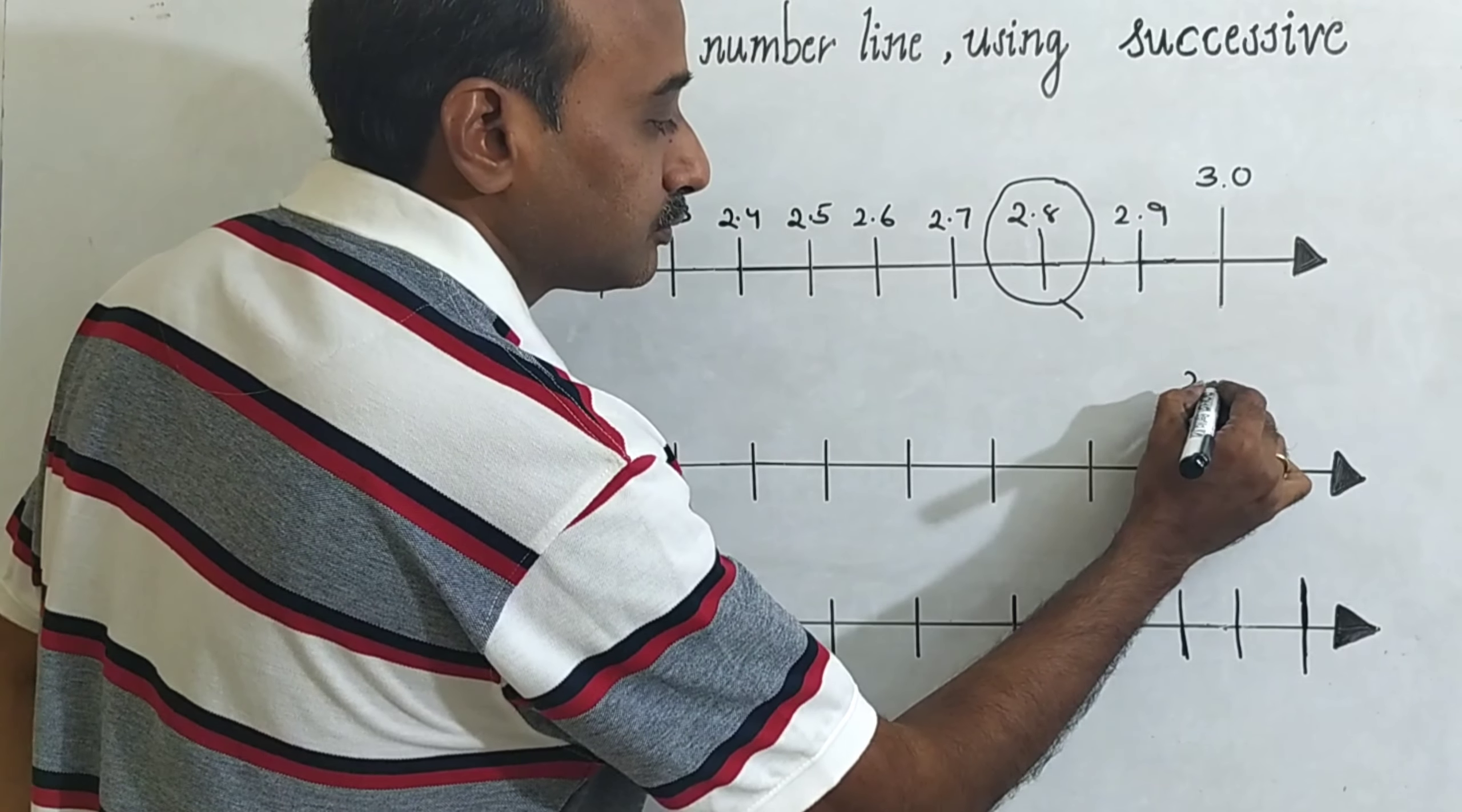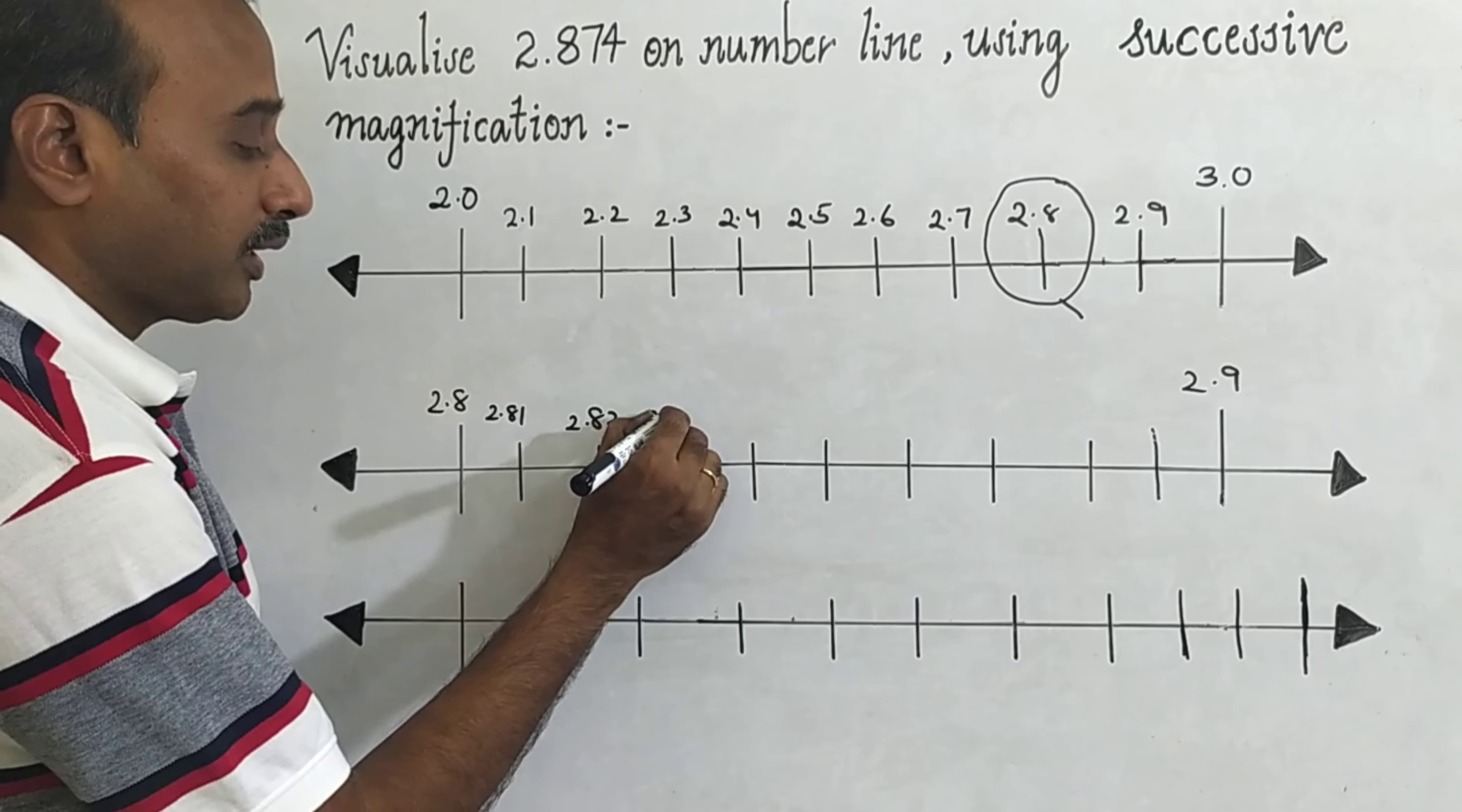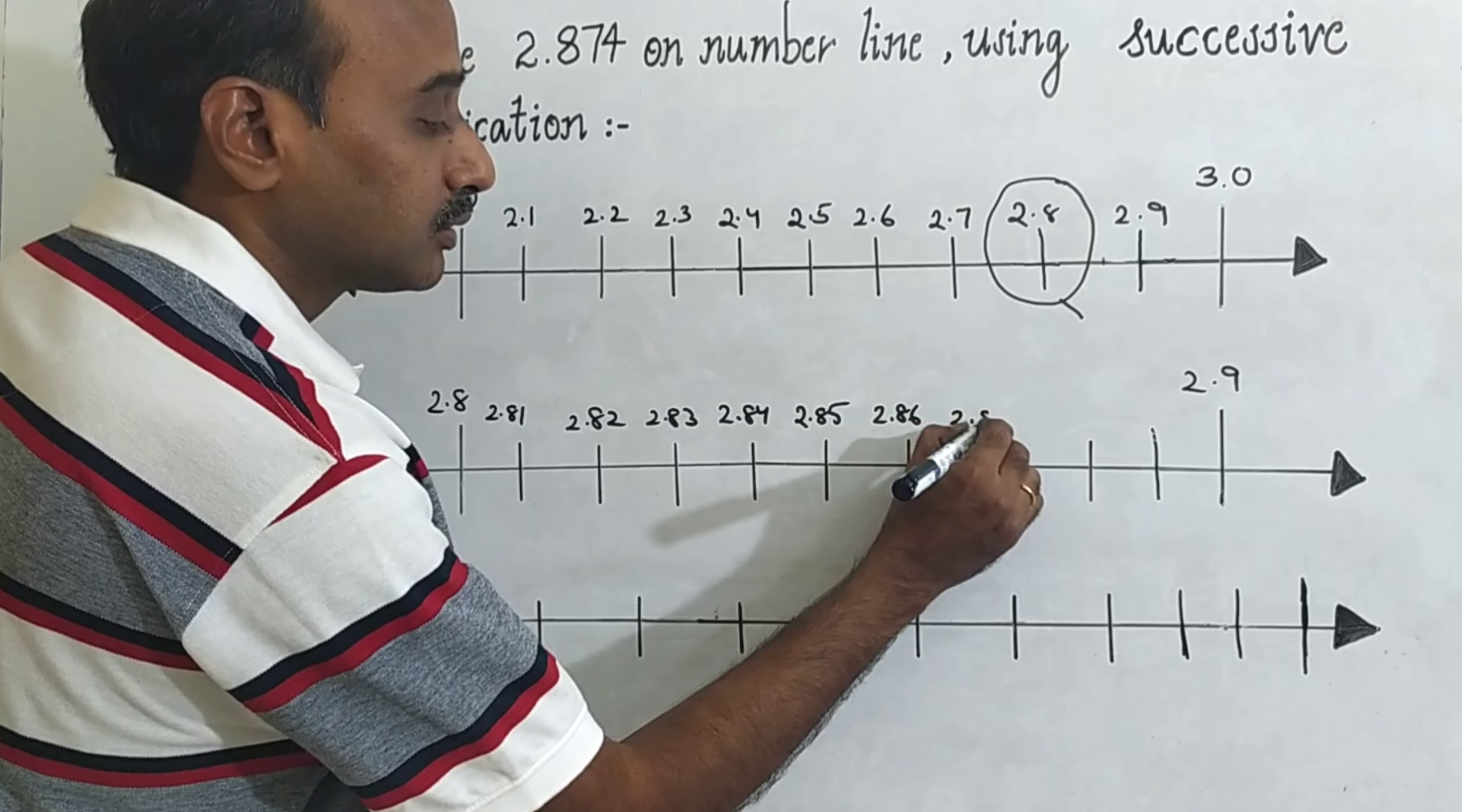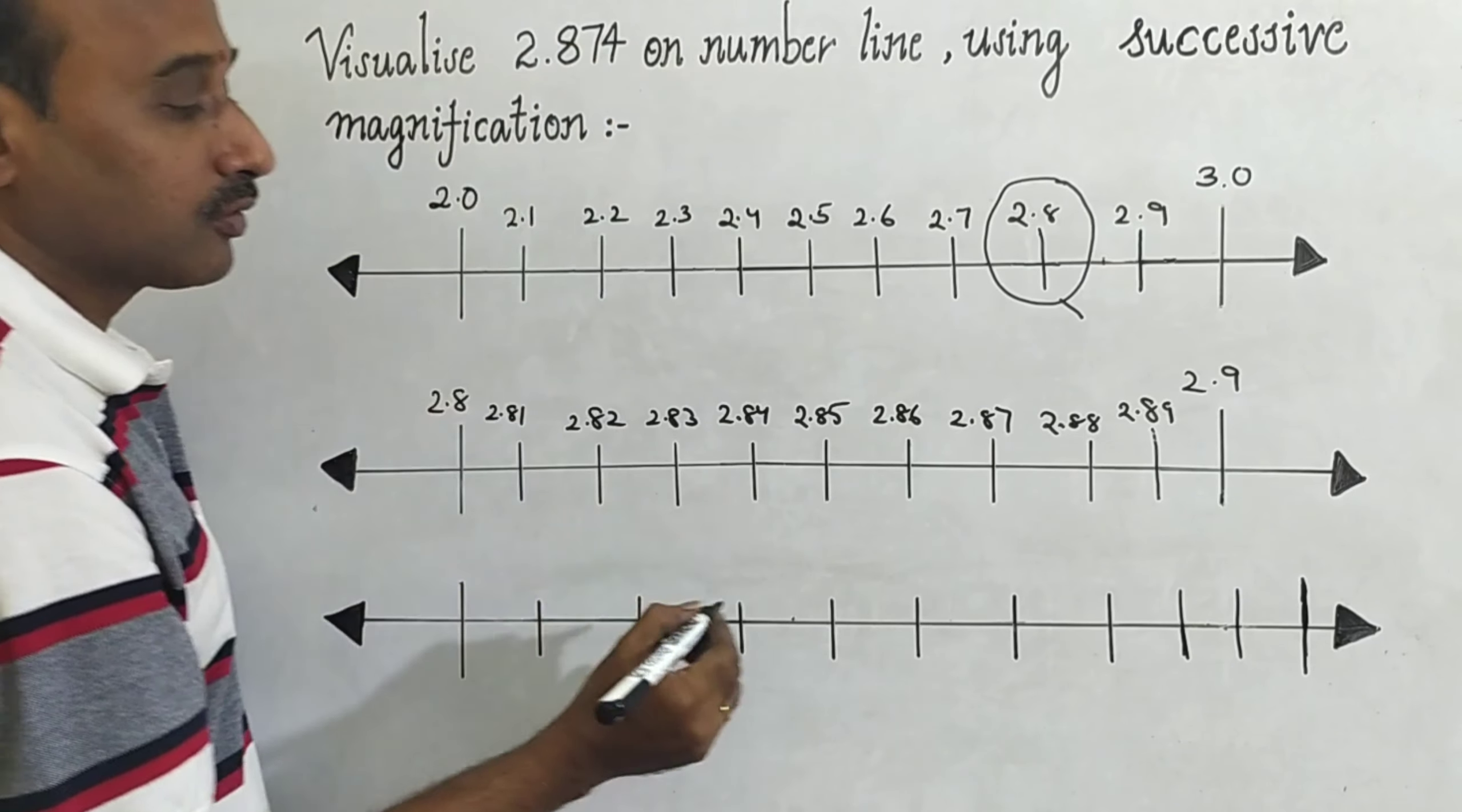Again it is divided into 10 equal parts. You can show on the number line, represent 2.81, 2.82, 2.83, 2.84, 2.85, 2.86, 2.87, 2.88, 2.89, this is 2.90.